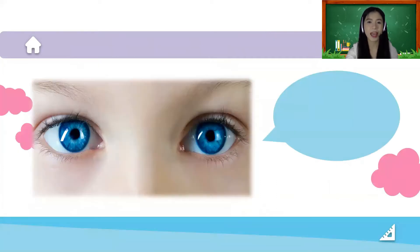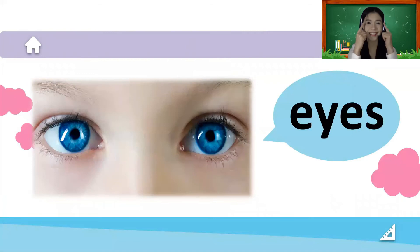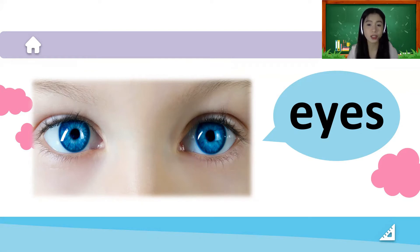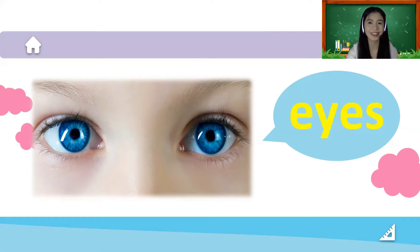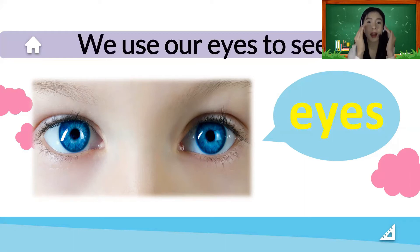Next, we have eyes. How many eyes do you have? We have one, two — can you touch your two eyes? Good job! Let's spell the word eyes: E-Y-E-S. We use our eyes to see everything that is around us. We have two eyes.